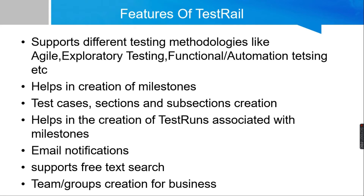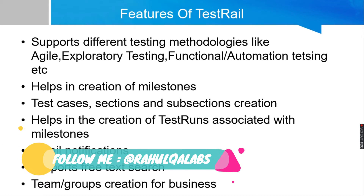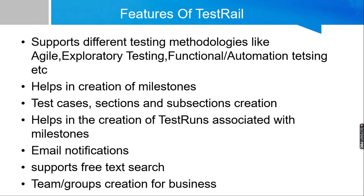TestRail provides the opportunity to create sections and subsections pertaining to your software functionality, and then you can add test cases pertaining to those sections or subsections as per the defined categories for the project. It also helps in the creation of test runs associated with milestones. For example, if you have defined milestones M1 and M2, and you want to release some part of the software in M1 and another part in M2, you can create test runs for each milestone, execute your test cases, and get the report.